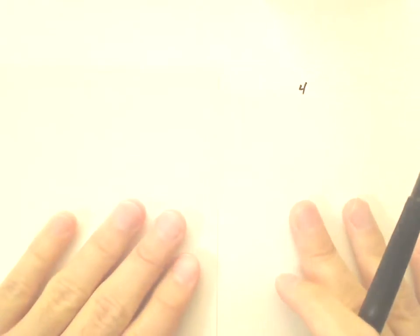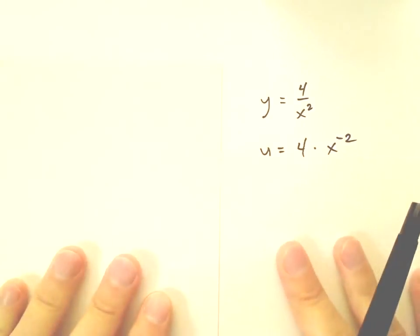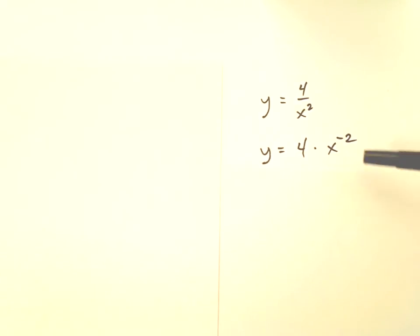Here's a similar problem, the difference being we have a constant in the numerator now instead of the denominator. It's actually very similar. You find a way to rewrite this denominator so that it's no longer dividing. In this case, when you divide by x squared, that's just the same as multiplying by x to the negative 2 power. So that's an easy way to change this into another form.